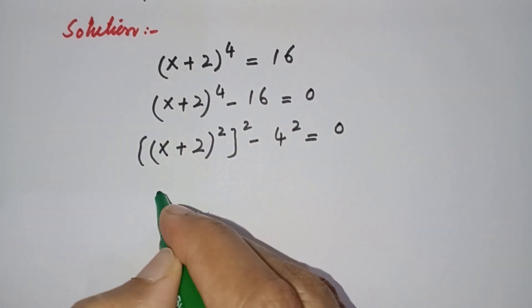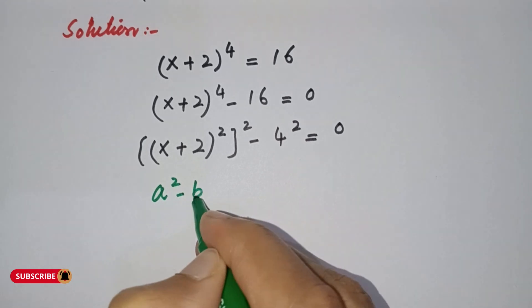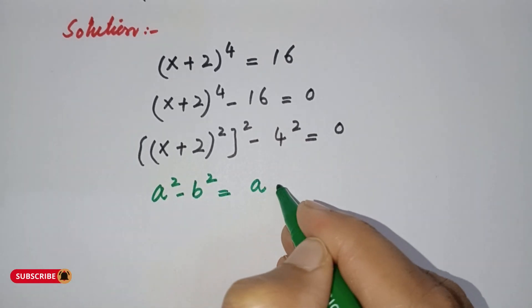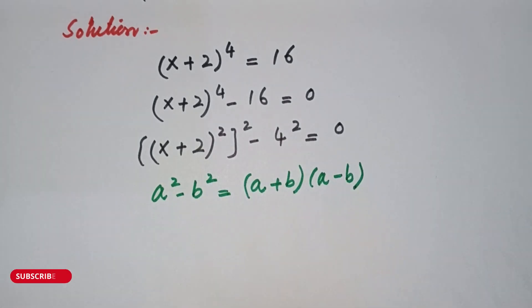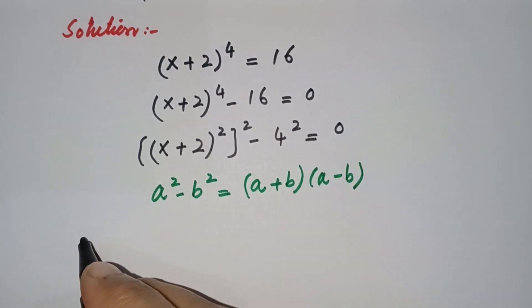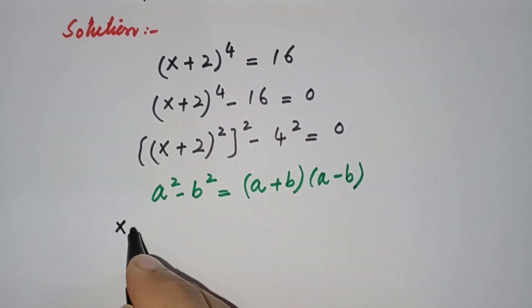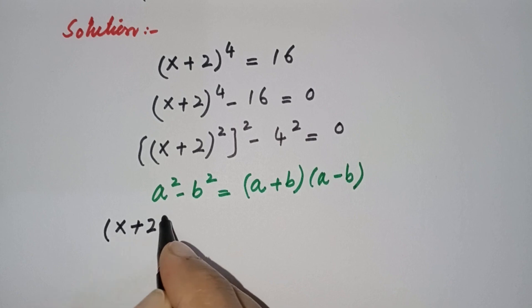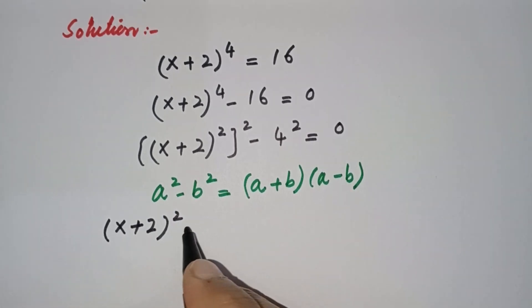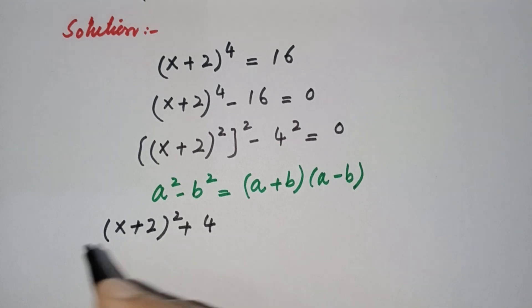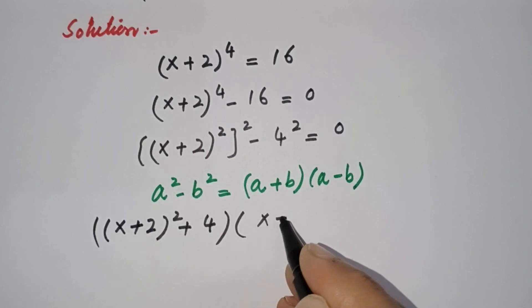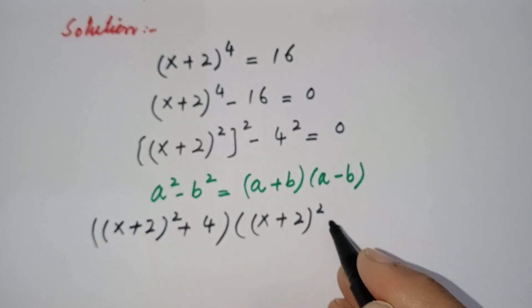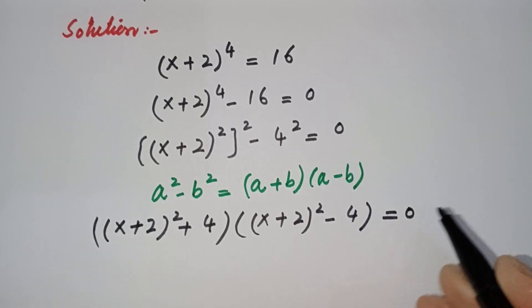In the next step we will use the basic formula: a² minus b² can be written as (a + b)(a − b). Applying this formula, we get: [(x + 2)² + 4] × [(x + 2)² − 4] is equal to 0.